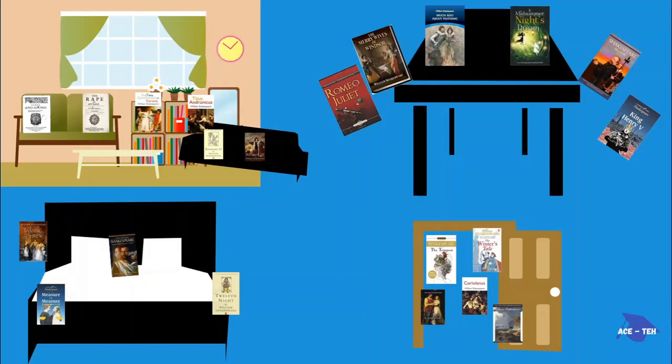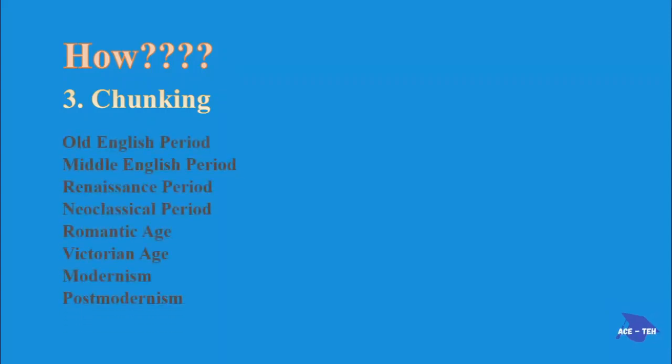See, make a story out of it and remember everything easily. The third technique on how to do it is by chunking. Instead of remembering a large cluster of data, create smaller chunks for better memory. For example, to remember the names of different periods of English literary history in its correct order, divide the ages into smaller chunks. Now we have OMRNRVMP. That is easier to remember than the whole list.